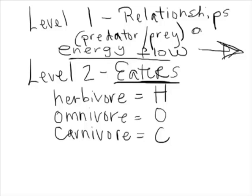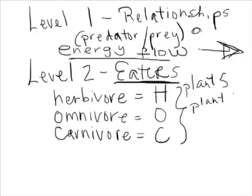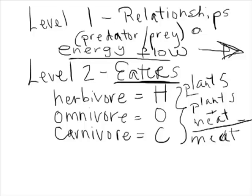Now, there are different types of eaters. Three of them you are incredibly familiar with: herbivore, omnivore, and carnivore. Herbivores eat plants — we're going to use an H to represent that. Omnivores eat both plants and meat. And carnivores eat meat only. We're going to label them as H's, O's, and C's when we start to categorize them on our food web.